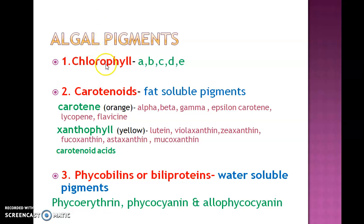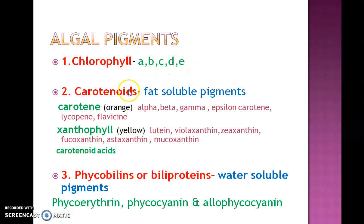Algal pigments are mainly of three different types: chlorophyll (green color pigment), carotenoids (fat-soluble pigments), and phycobilins or biliproteins (water-soluble pigments). Chlorophyll is of five different types based on the wavelength of light it absorbs: chlorophyll a, b, c, d, and e. Carotenoids are of three types: carotene (orange), xanthophyll (yellow), and carotenoid acids.